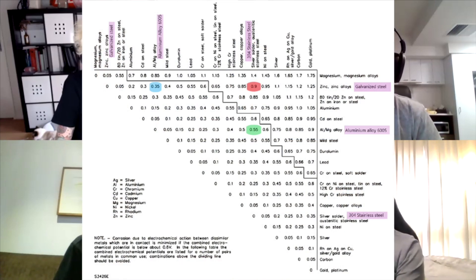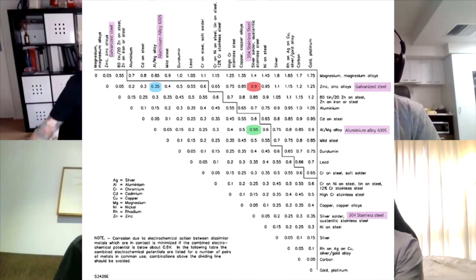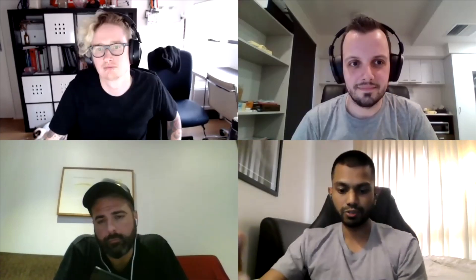Option two is to look at the standard called UL 2703, which is specifically for solar mounting. In that standard, if the two metals in contact differ by more than 0.6 volts, it's a concern; if it's less than 0.6, it's not a concern.